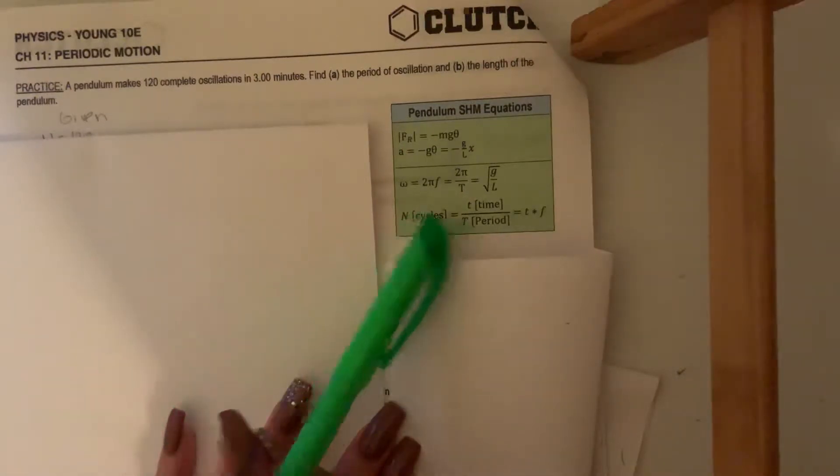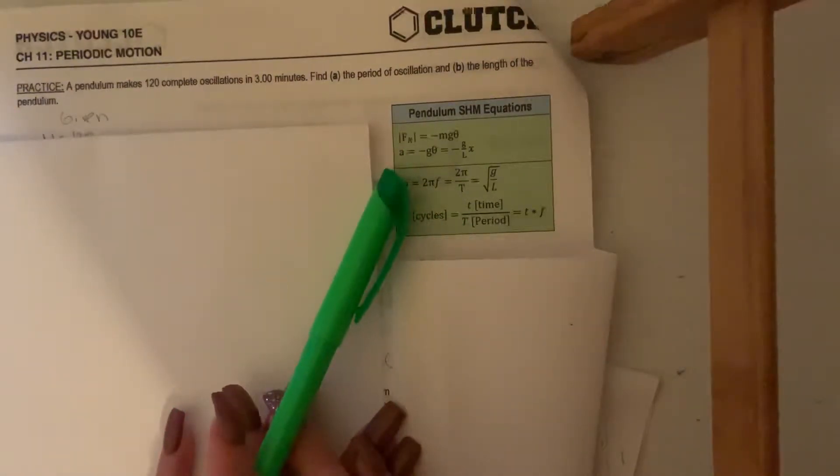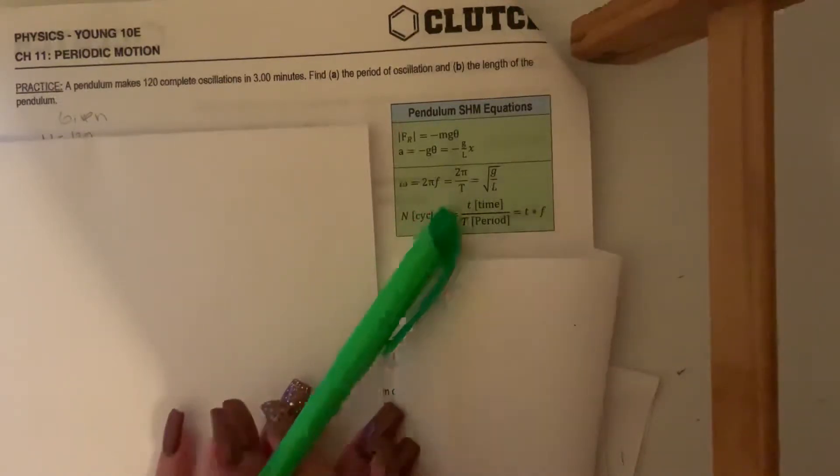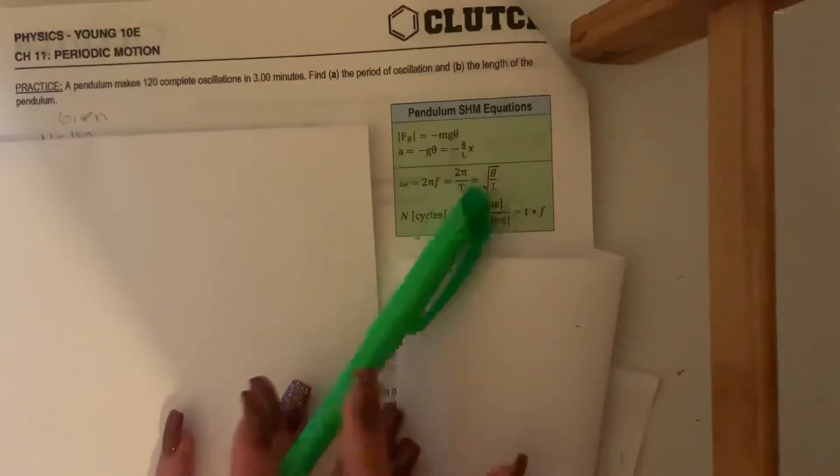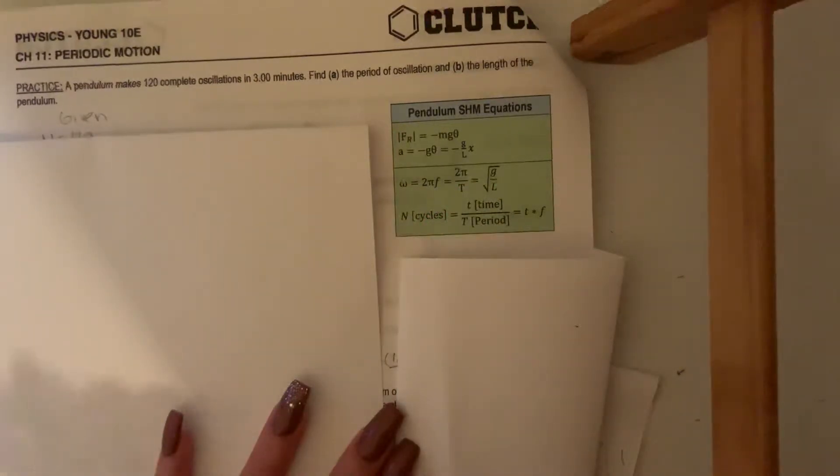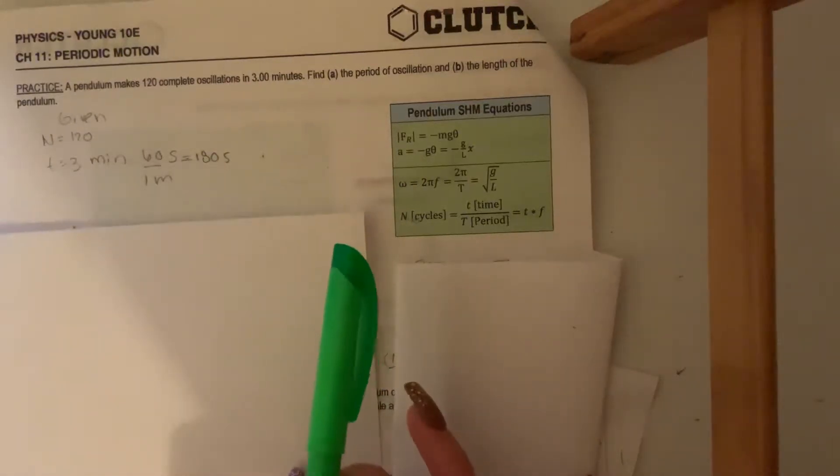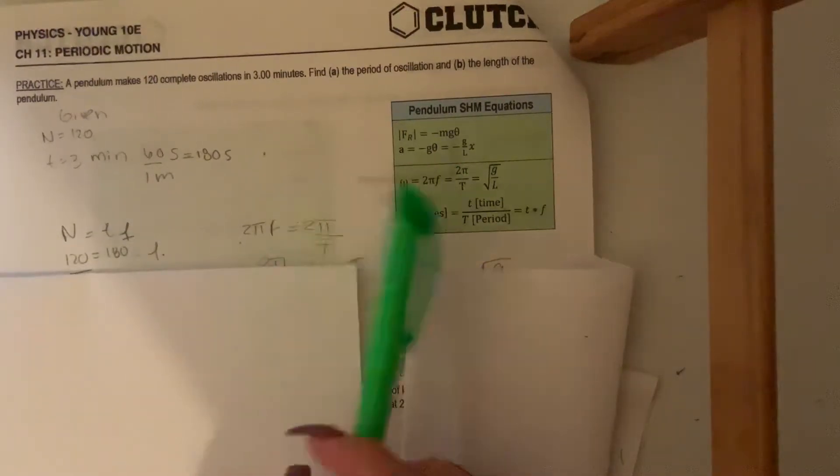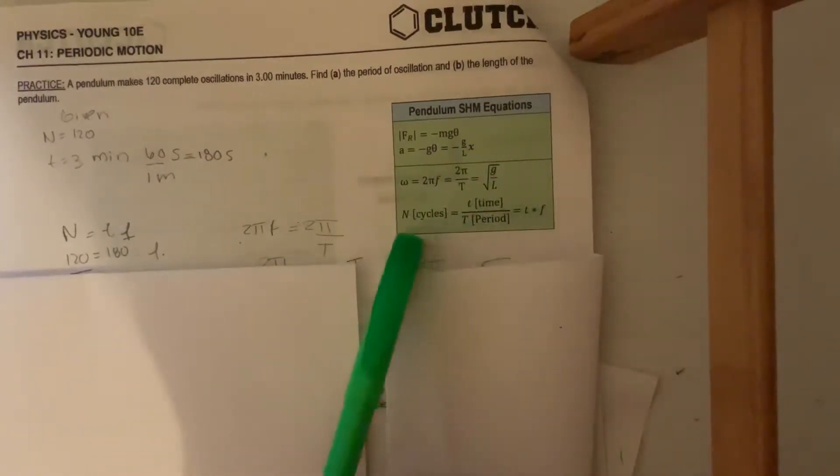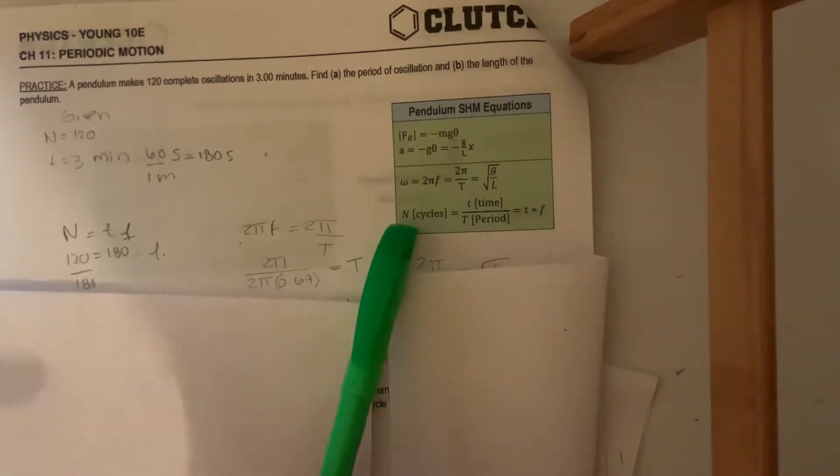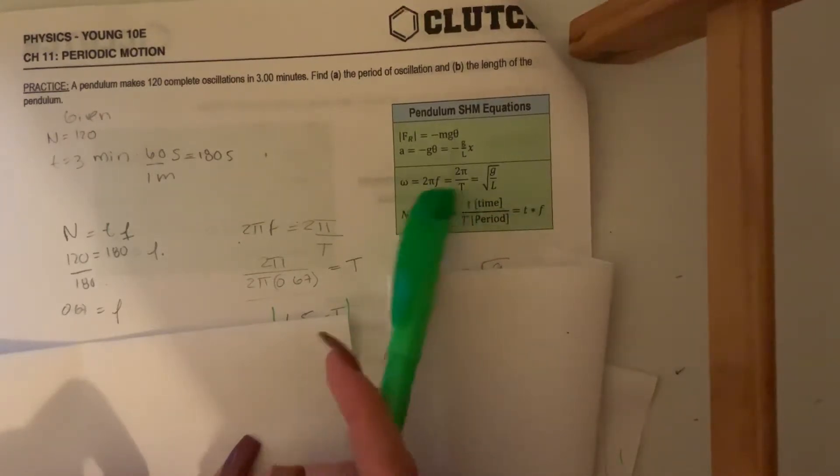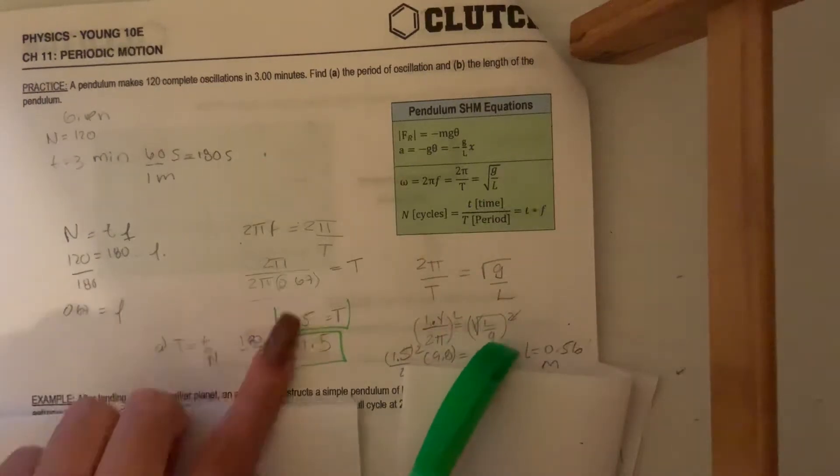We can use this formula, but we don't have the acceleration. We can use this one because we will have the period and then we just work with these two. So I write the given, I convert to seconds, I use this and I found frequency, and then I relate this one and found period like this.